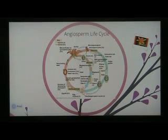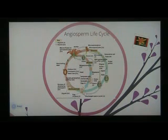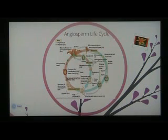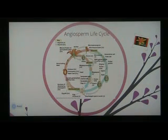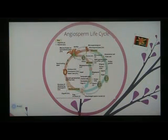Stamens carry the male gametes, and the pistil carries the female gametes needed for sexual reproduction. Angiosperms have a unique reproductive cycle consisting of an alternation of generations and production of two types of spores: microspores, which become male gametophytes, and megaspores, which become female gametophytes. The angiosperm life cycle begins with the diploid 2N flower of the mature sporophyte plant. Within the anther, the microsporocytes develop and undergo meiosis to produce a haploid 1N microspore. Each of these undergoes one mitotic division to produce a generative cell and a tube cell — together making up an immature pollen grain.